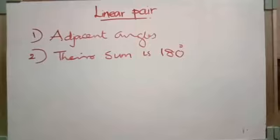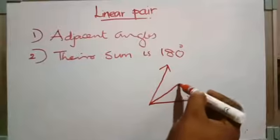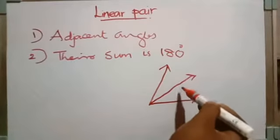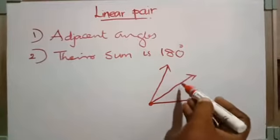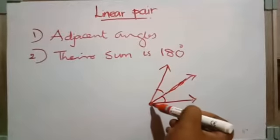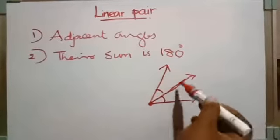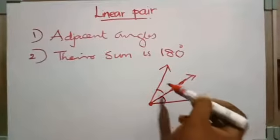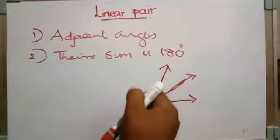Recall the concept of adjacent angles. When do we say two angles are adjacent? If two angles have a common arm and a common vertex, with the non-common arms on either side of the common arm, we call these two angles adjacent angles.